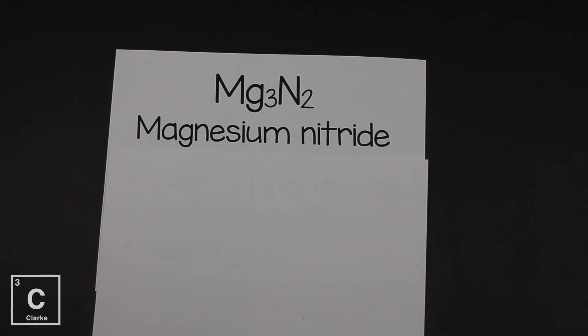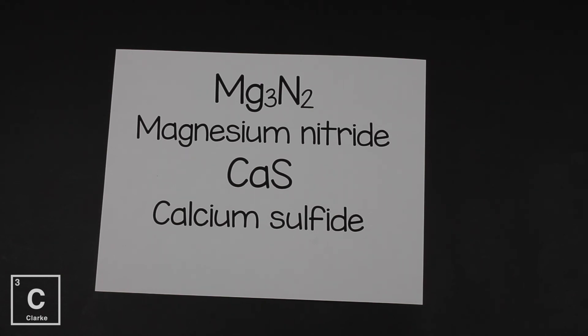Let's try one last example. CaS. Ca is calcium. We're going to leave that exactly the way it is. S is sulfur. But remember, we've got to change that ending to IDE. So we have calcium sulfide.